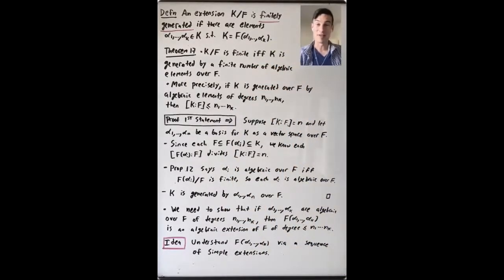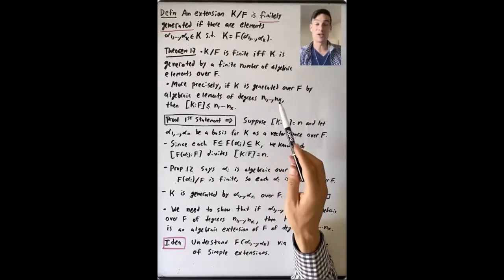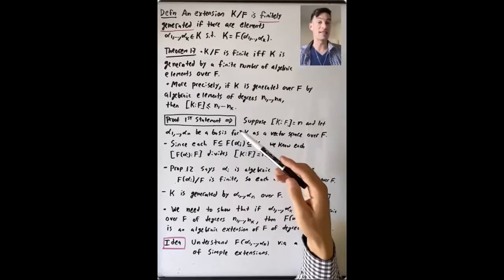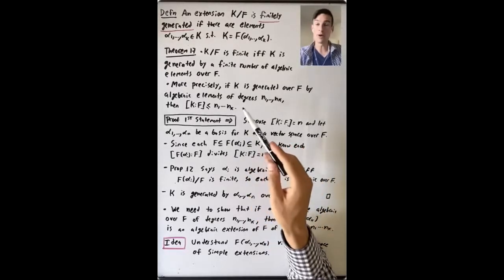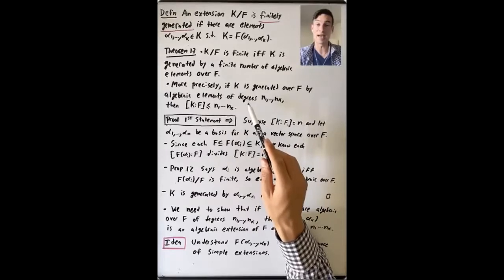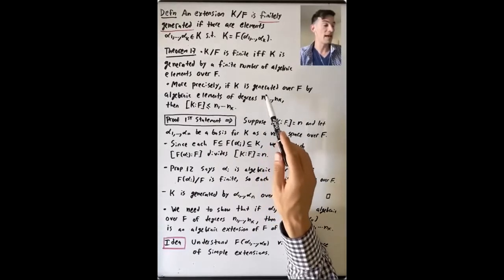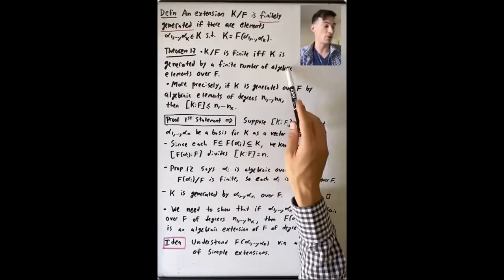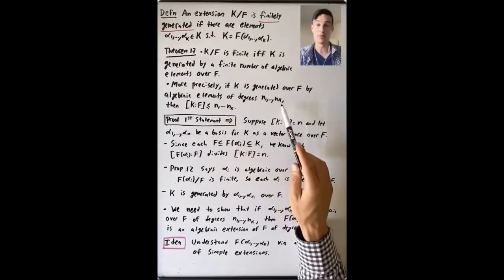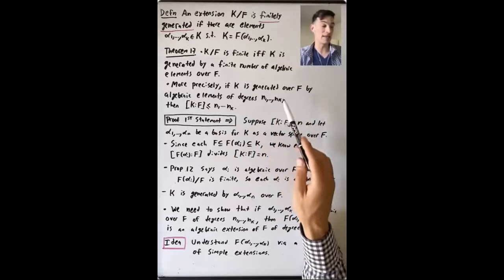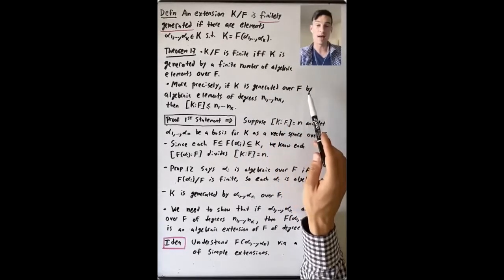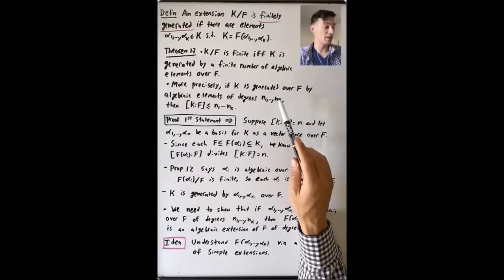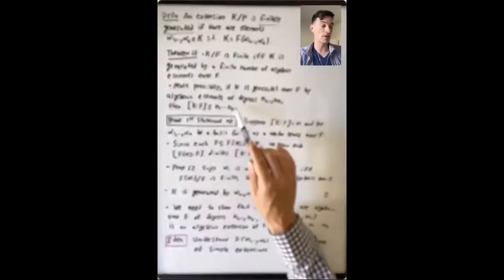With that definition in mind, the goal of this video is to prove a theorem that tells us about fields generated not by a single element, but by finite sets of elements. We want to prove Theorem 17, which says that the extension k over f is finite if and only if k is generated by a finite number of algebraic elements over f. If k is generated over f by algebraic elements α₁ through αₖ of degrees n₁ through nₖ, then the degree of the extension k over f is at most the product of these degrees.